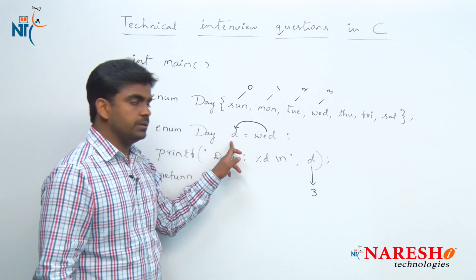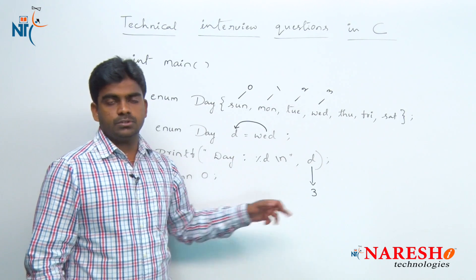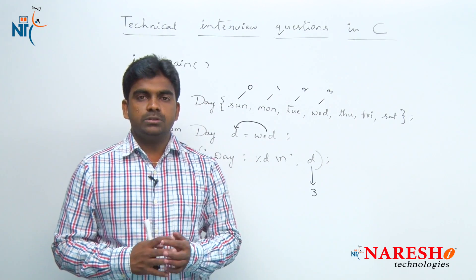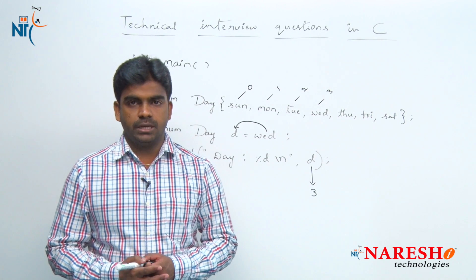So that Wednesday value is 3. That will be printed here. So this is output of this program. Hope you understood. For more videos, please subscribe to Narish IT channel. Thank you.